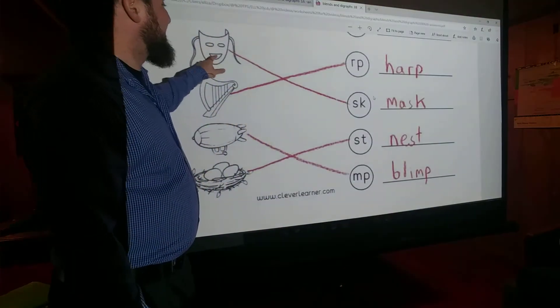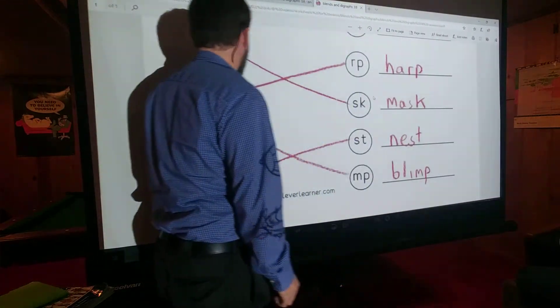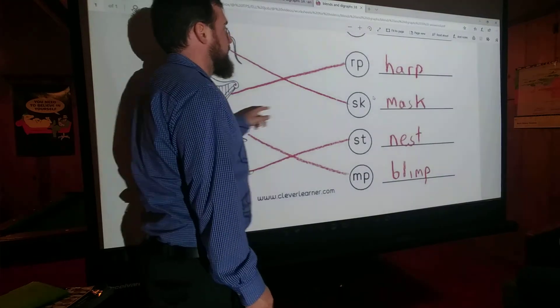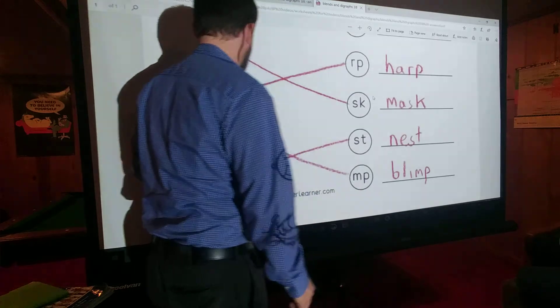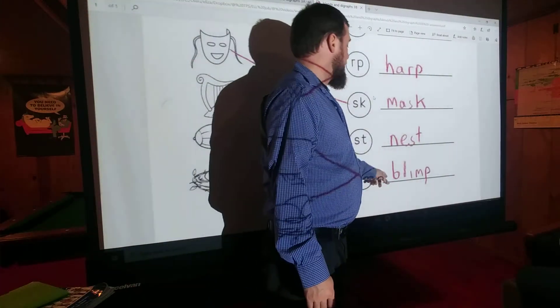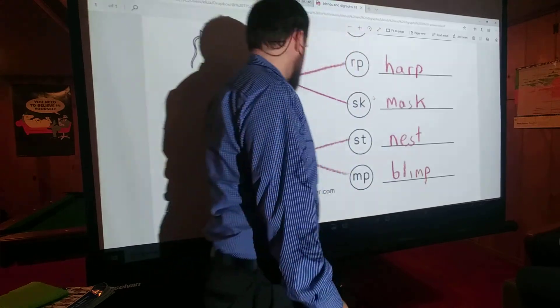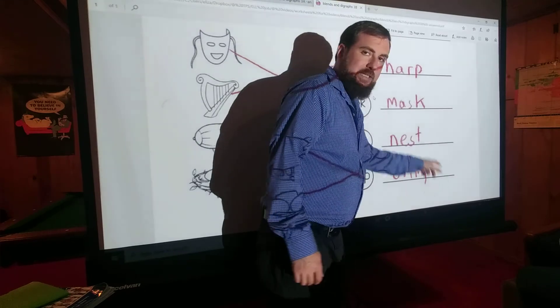Mask - SK. Mask. Harp - RP. Harp. Blimp - MP. Blimp. Nest - N-E-S-T. ST. Nest.